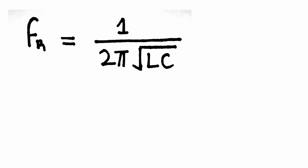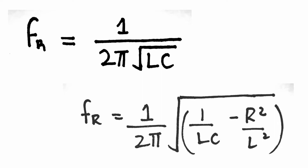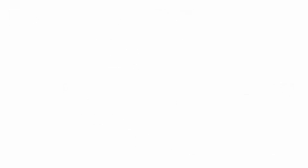Resonant frequency is given as f_r = 1 / (2π√LC). However, at low frequencies where the inductor has notable internal resistance, that resistance should also be taken into account, giving the formula: f_r = (1 / 2π) × √(1/LC − R²/L²).